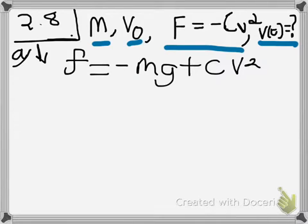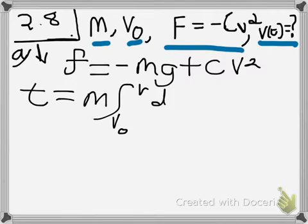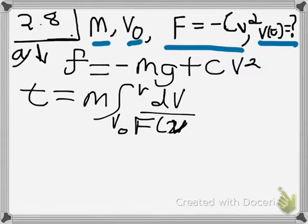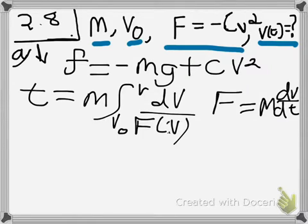Your book gives a handy equation coming from the definition of force that says if we have a velocity-dependent force, we can calculate time by integrating over velocity. This is equation 2.52 in your book, and that just comes from the fact that force is mass times acceleration. So all I have to do here is plug in the force I was given and perform the integral.